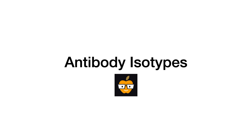In this video, I'll simplify everything that you need to know about the various antibody isotypes. This is in my immunology series, so if this is the first video in the immunology series that you're watching, I suggest you start from the beginning. When we say isotype, we're referring to the actual antibody subtype — for example, IgM versus IgG versus IgA versus IgE versus IgD.